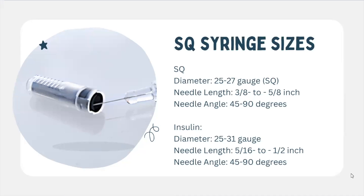Insulin syringes are slightly different. The diameter can be 25 to 31 gauge. The needle length can be five-sixteenths to one and a half inches. The angle is going to be very similar though — 45 to 90 degrees.